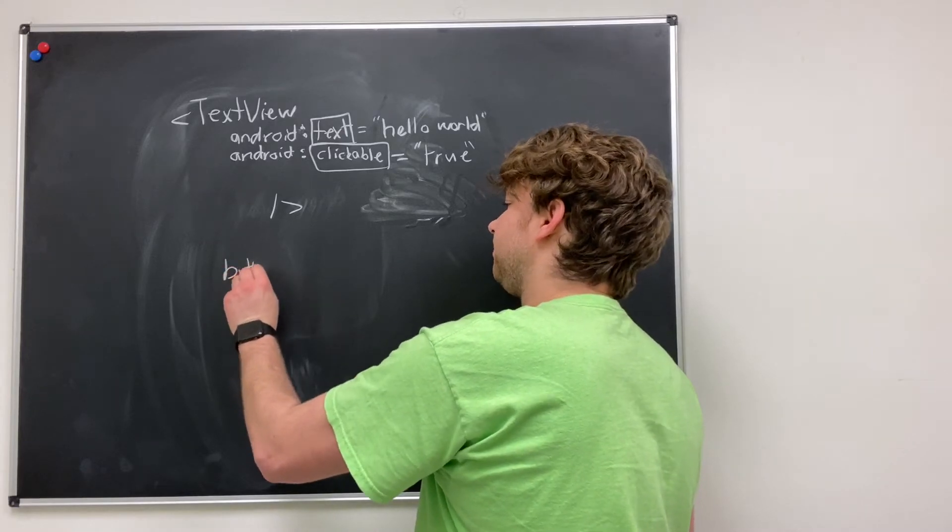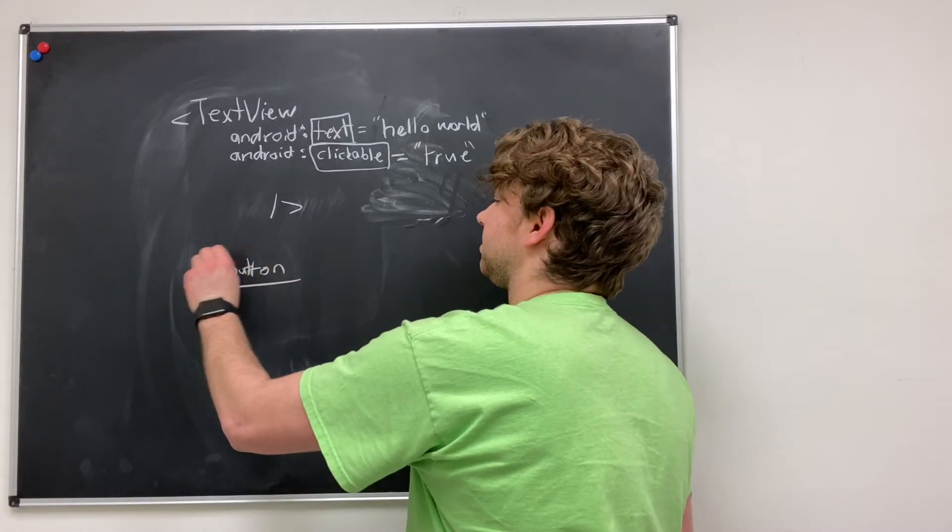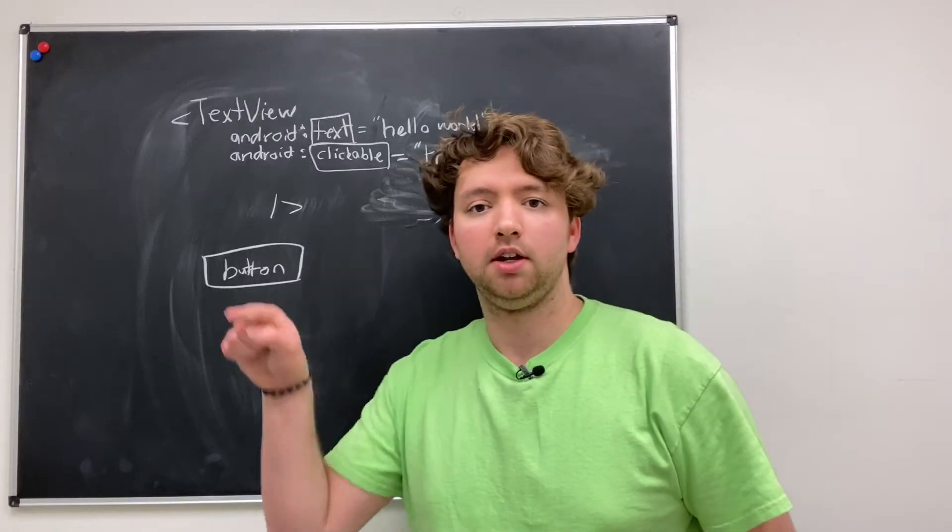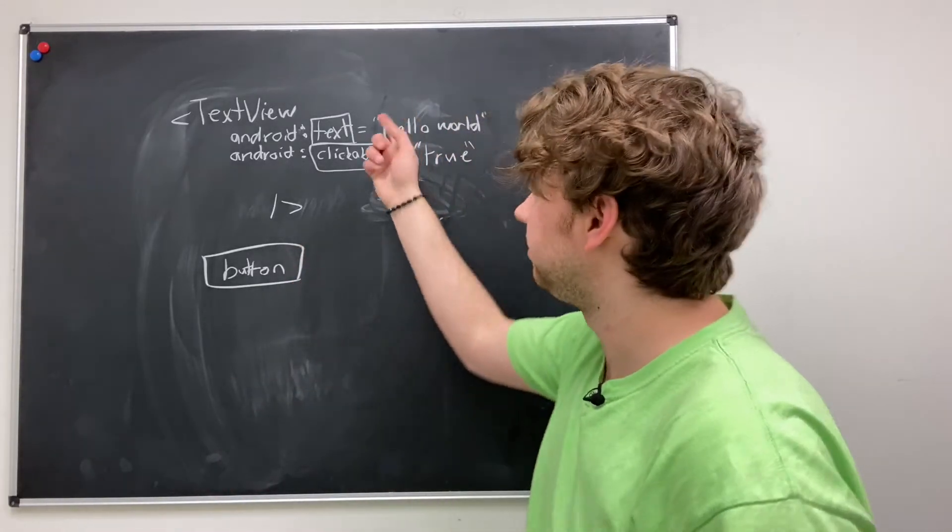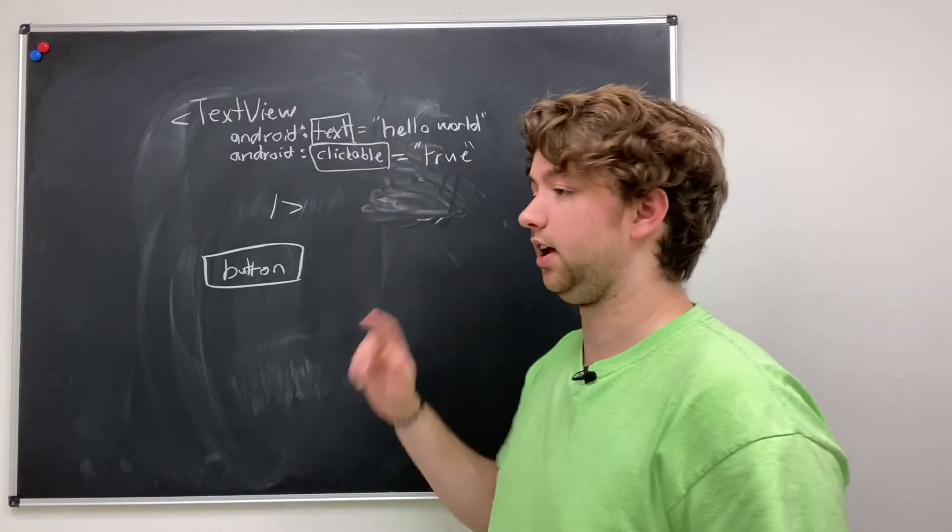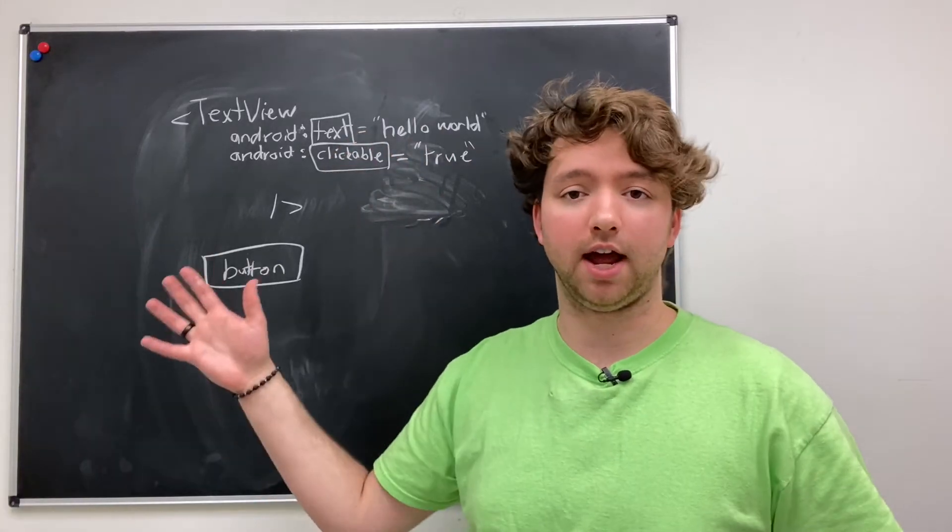So for example, a button, you know, that's something you can click or poke. That's going to have different attributes than text. And all the other views are going to have different attributes as well.